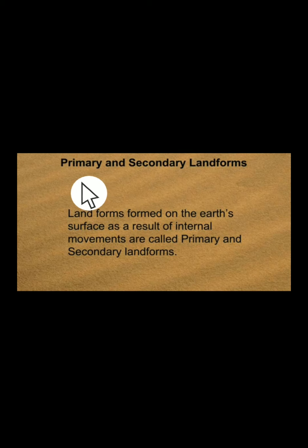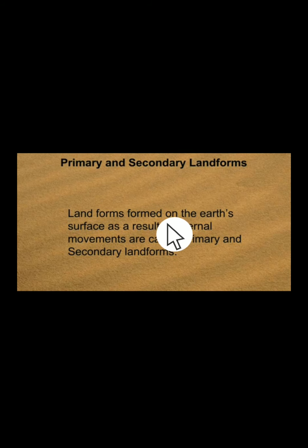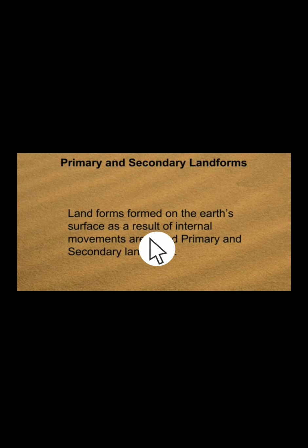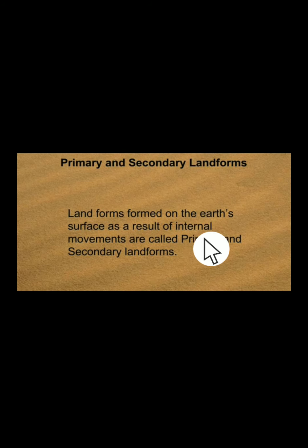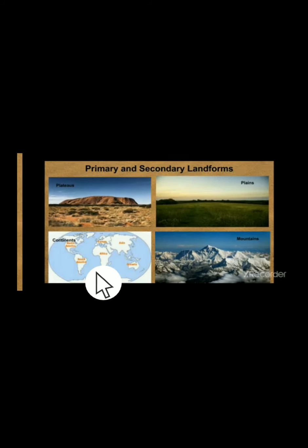Firstly, what do we mean by primary and secondary landforms? Landforms formed on the earth's surface as a result of internal movements are called primary and secondary landforms. So, landforms formed because of internal earth movements, that is, endogenetic movements, are called primary and secondary landforms.